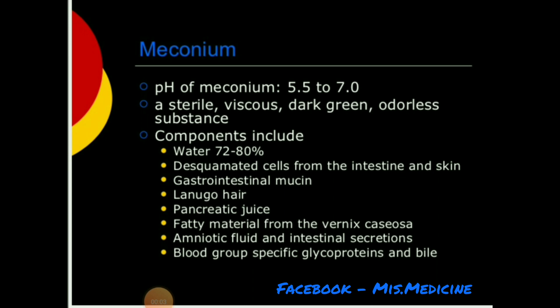What is meconium? It is a sterile, viscous, dark green, odorless substance — in other words, the first feces or first stool of life. Its pH is 5.5 to 7.0. It includes water (72 to 80 percent), desquamated cells from the intestine and skin, gastrointestinal mucin, lanugo hairs, pancreatic juice, and fatty material.